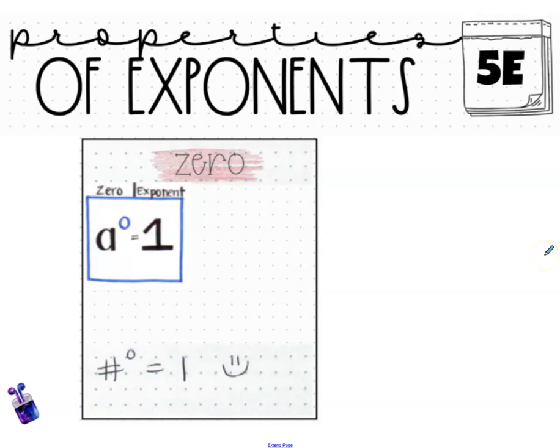Now it's time to look at the official rule for zero exponents. If you didn't notice in the table that you created above, every single one of them, if you expanded and divided, actually came out to one.